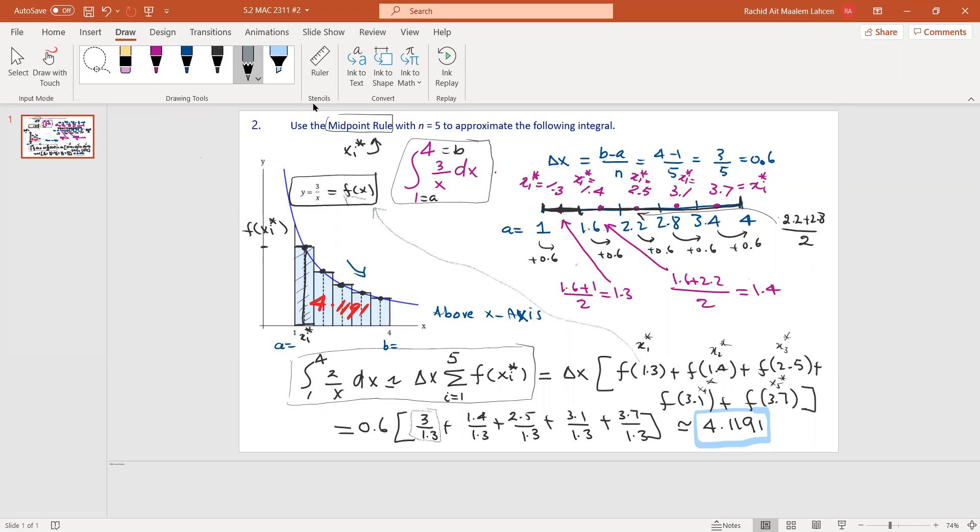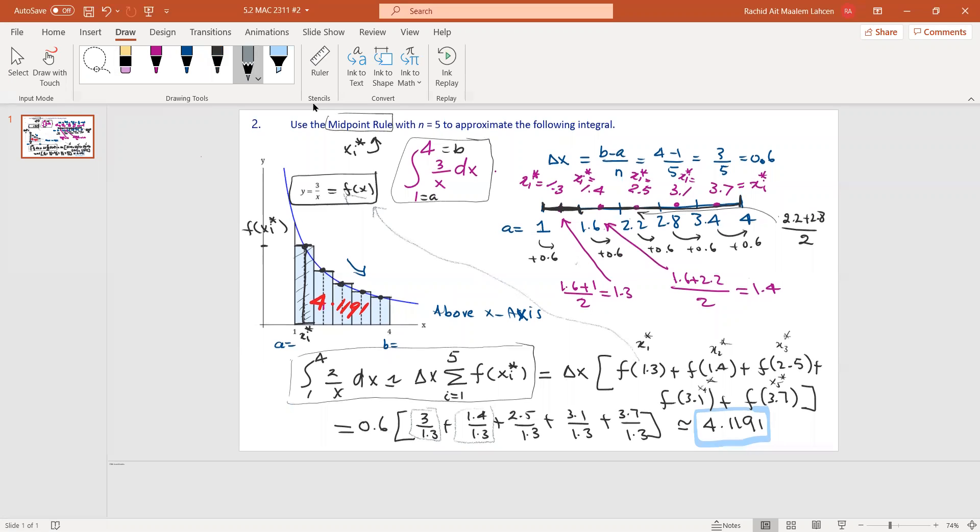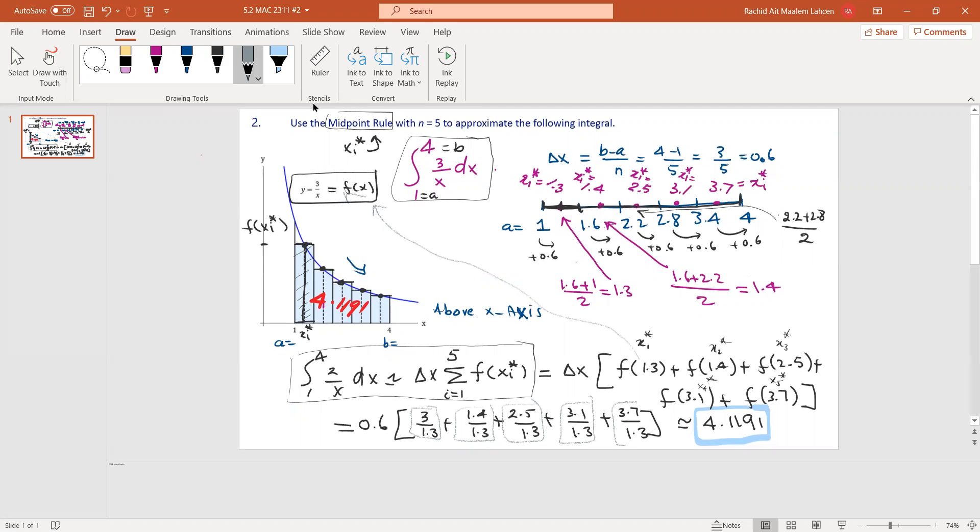We substitute 1.9 into the function, then 2.5, 3.1, 3.7, and of course 0.6 is the delta x there. It's just a matter of a calculator problem now.